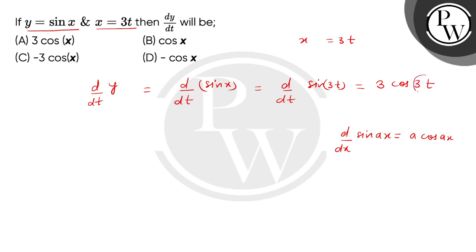Now we will put 3t equals x. So we get 3 cos x. So the correct option is option A. Thank you.